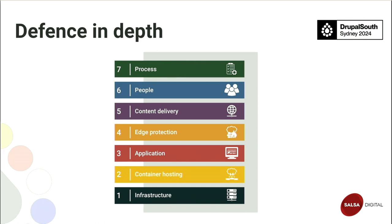Salsa's defense in depth strategy consists of seven layers: infrastructure, container hosting, application, edge protection, content delivery, people, and process. For this presentation, we'll be focusing mainly on infrastructure, container hosting, application, people, and process, because organizations usually directly control these elements of their hosting stack. Our strategy is also built around a containerized hosting stack using Kubernetes.